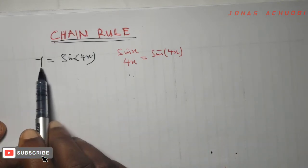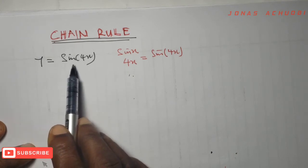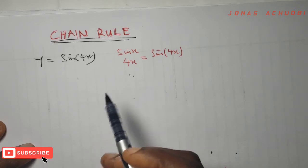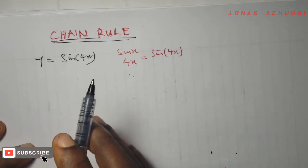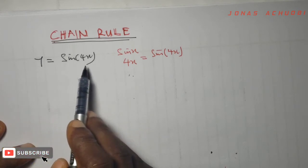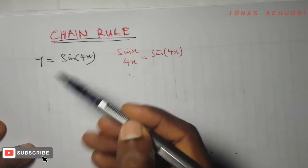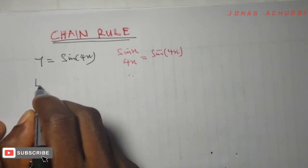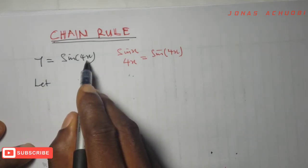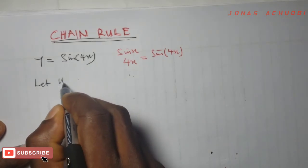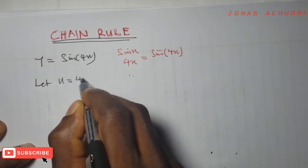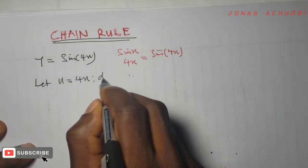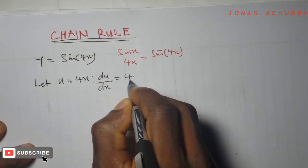So let us take this as our first example: y is equal to sine 4x. We are asked to differentiate, which means we want to find dy/dx. The rule says to differentiate this function, the first thing you do is call out the inner function — the function sitting inside. In this case, the function sitting inside is 4x. So I will say let u be equal to 4x. Differentiate u with respect to x, and that will be 4.